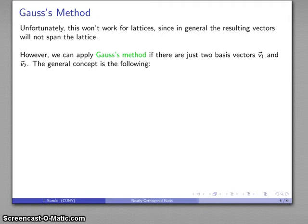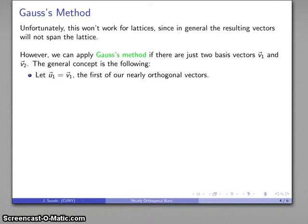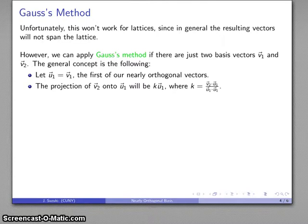We can apply what's known as Gauss's method. If there are just two basis vectors, then I can apply the following idea. The general concept is pretty straightforward. I'm going to pick one of those vectors to be the first of our basis vectors, the first of our nearly orthogonal vectors. The projection of the second basis vector onto our first basis vector is going to be some multiple of that vector, and the exact fraction is going to be determined by the dot product. That's our standard projection formula.